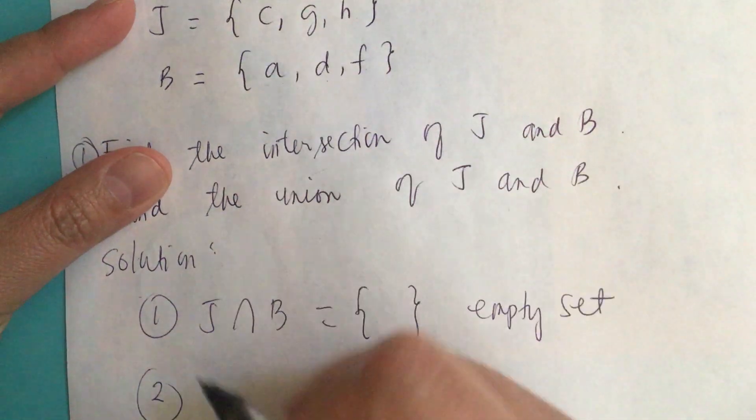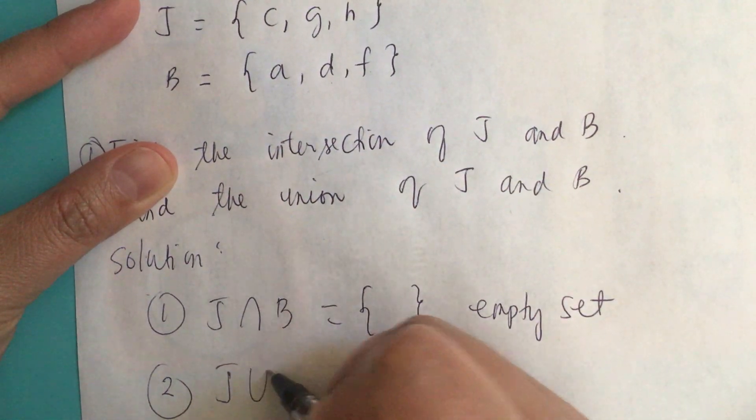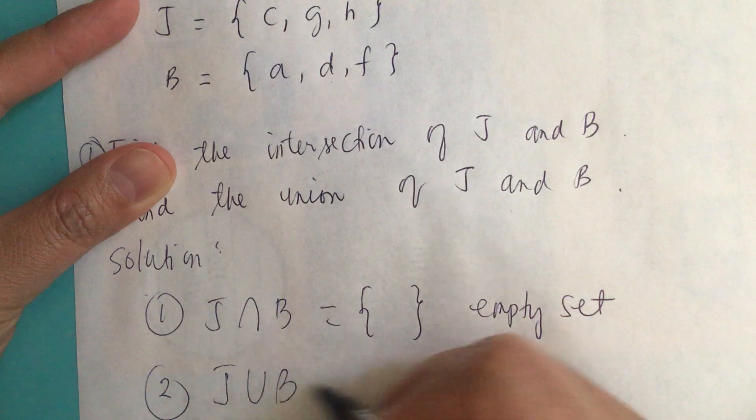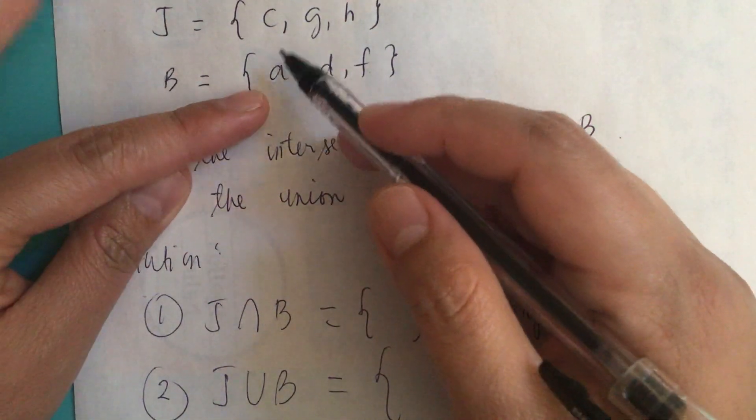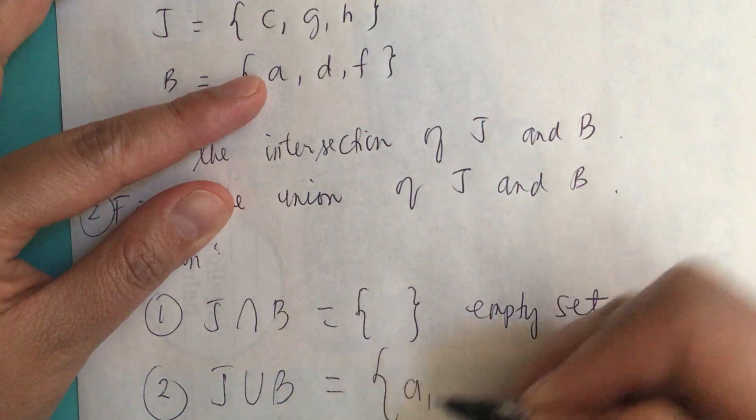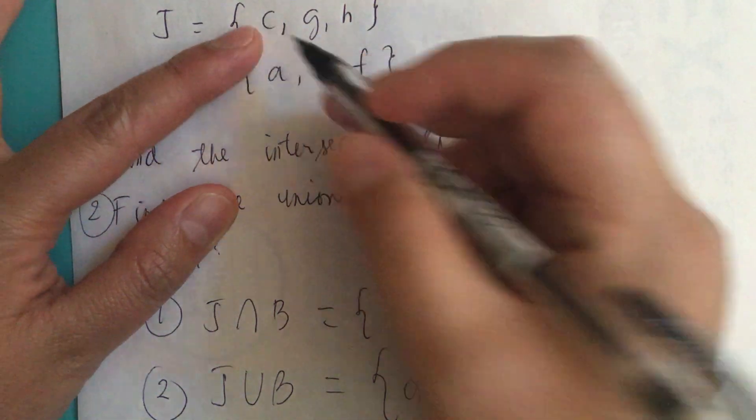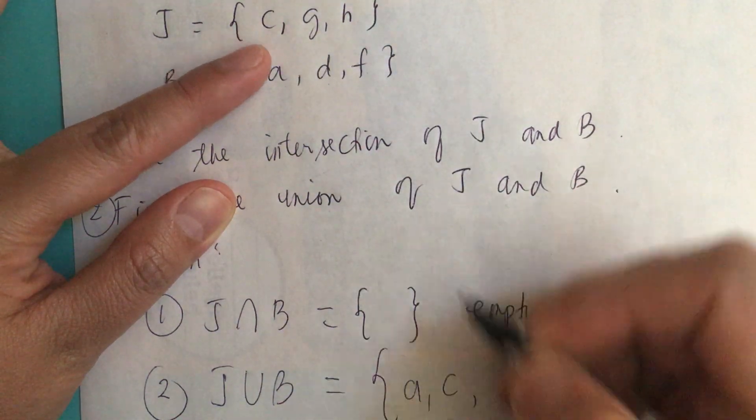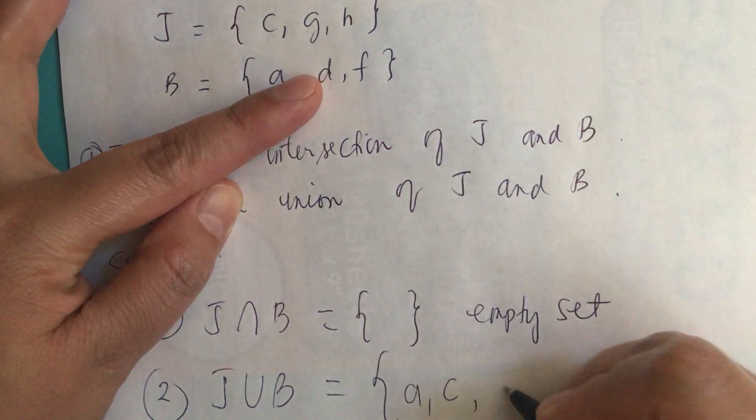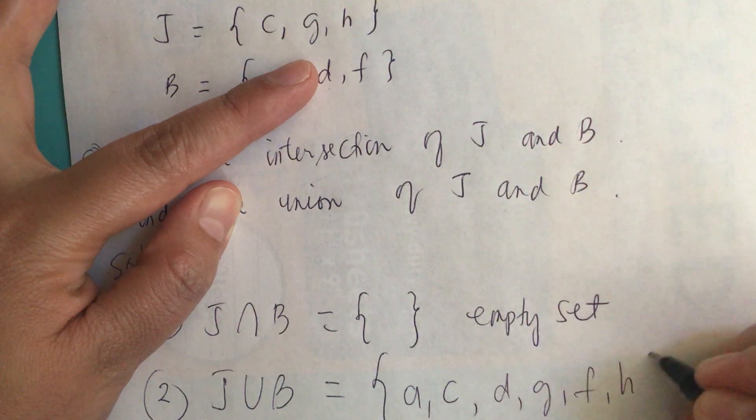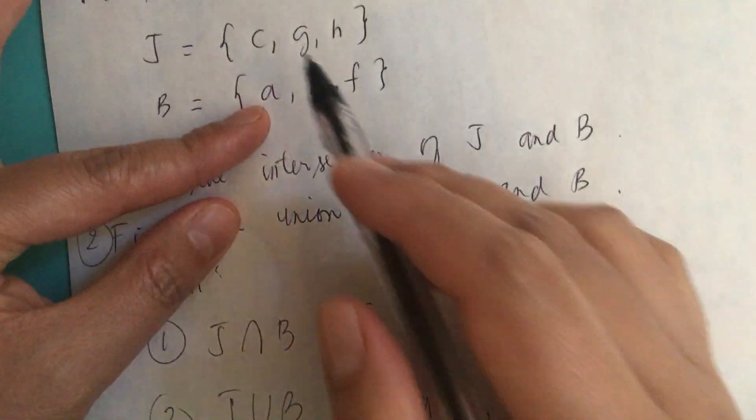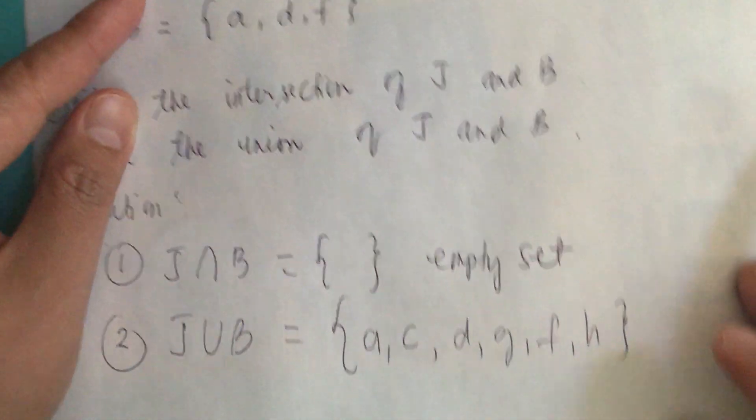Let's do that. We write J union B as this. We have A, and then we have C, and then D, G, F, and H. It contains all the elements in J and in B.